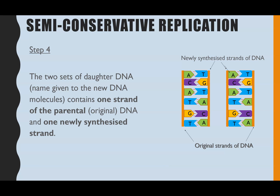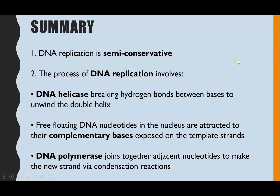We now have our two sets of daughter DNA. The parental DNA has been split in half — we've got one of the original strands in each piece of daughter DNA, and two newly synthesized strands. This links back to the definition of semi-conservative replication: when DNA is replicated, the new DNA has one of the original strands and one completely newly synthesized strand.